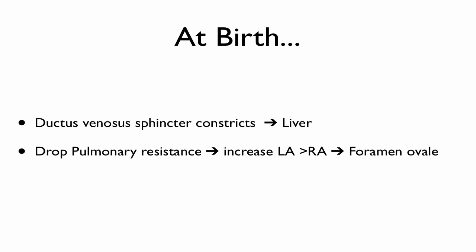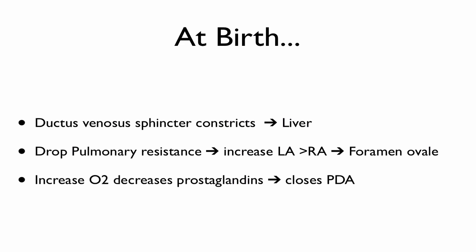The right atrial pressure also drops because once the umbilical vein and ductus venosus constrict, there is a massive drop in IVC pressure, further lowering right atrial pressure and causing the foramen ovale to close. Once you start oxygenating blood properly, the increase in O2 decreases prostaglandin secretion, which eventually closes the ductus arteriosus — this happens within the first one to two days.